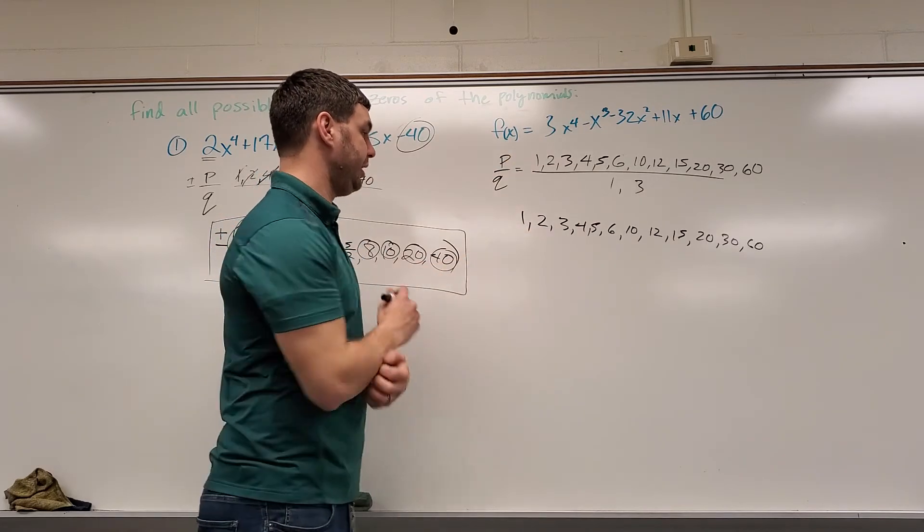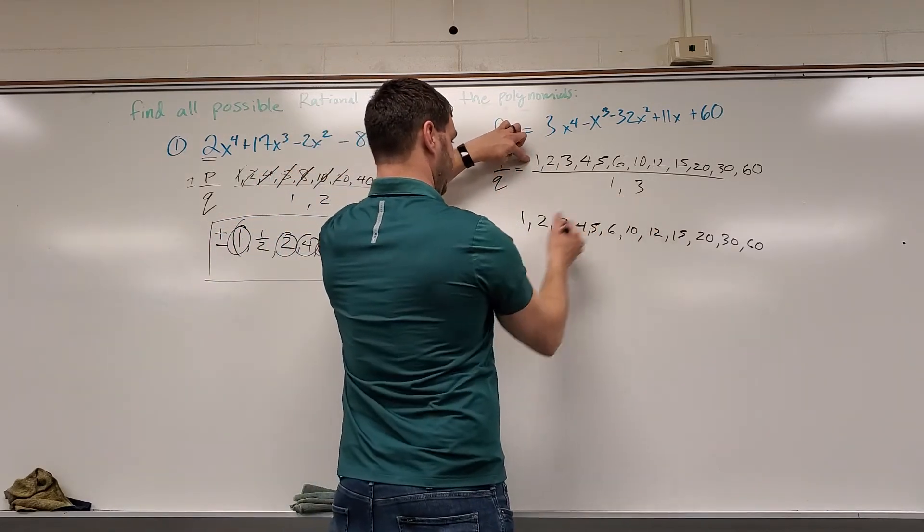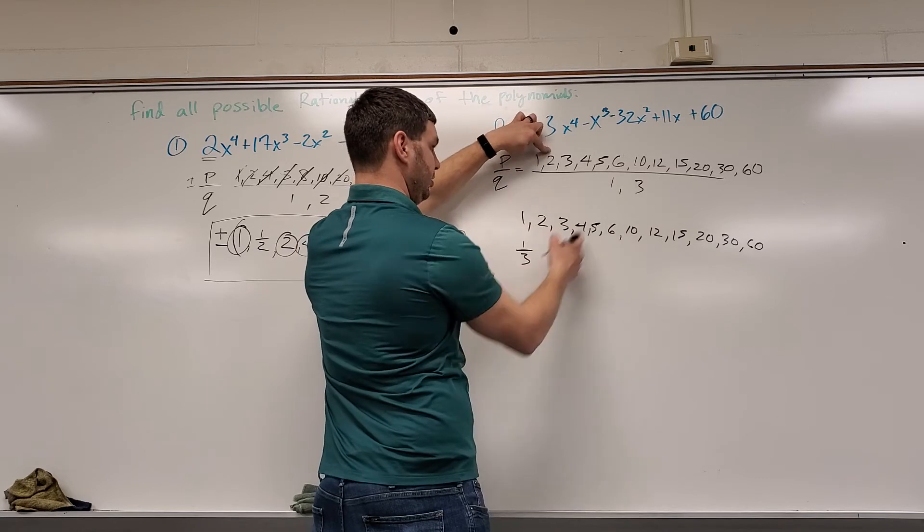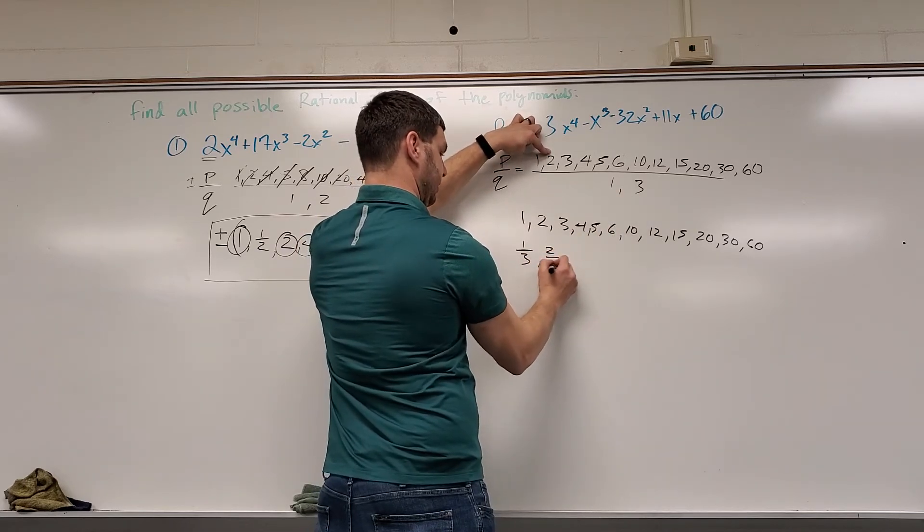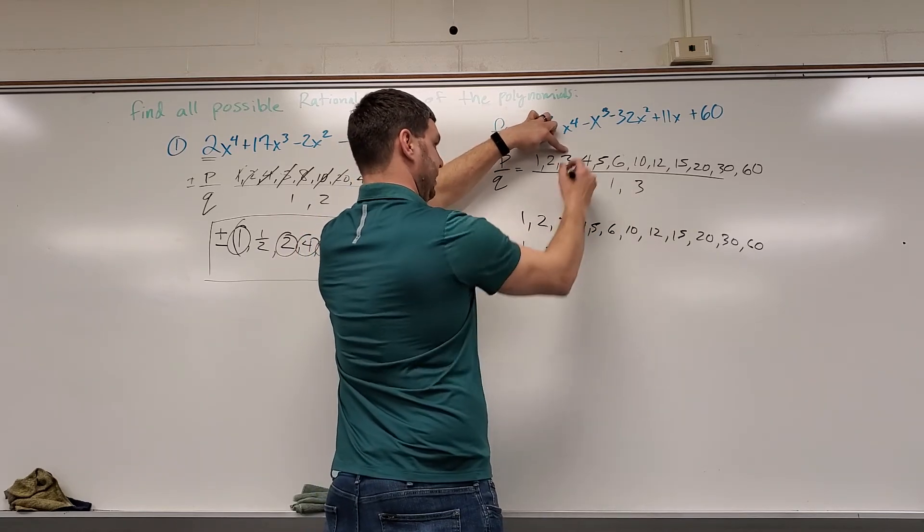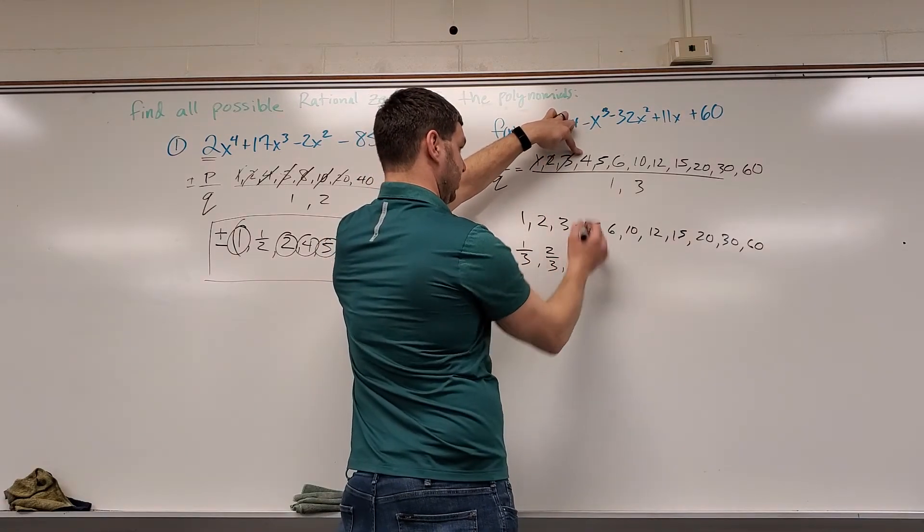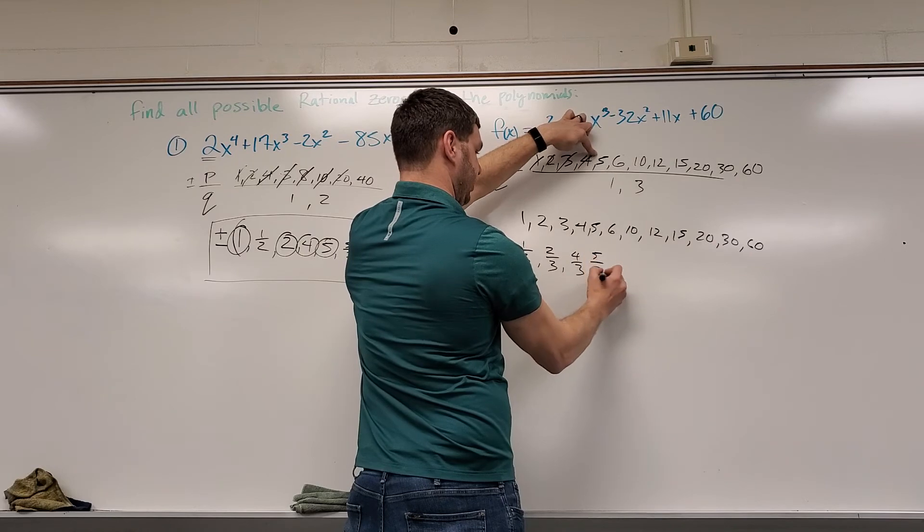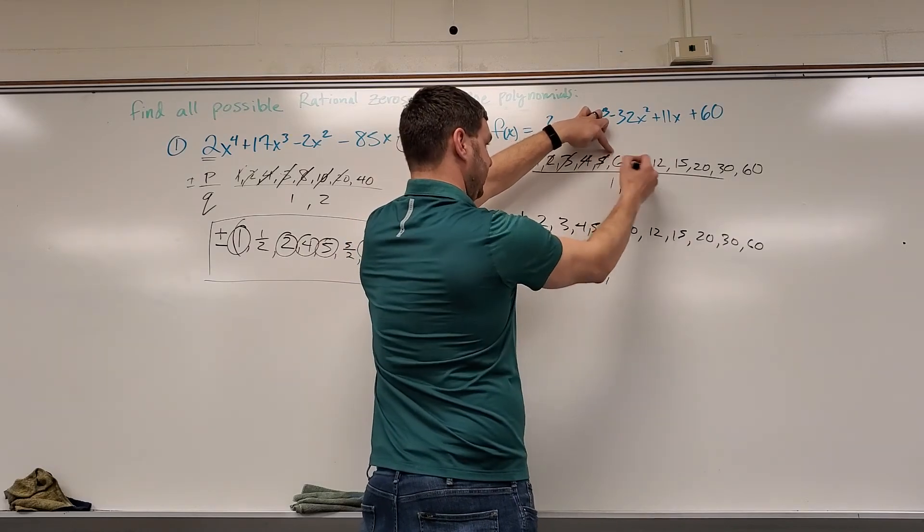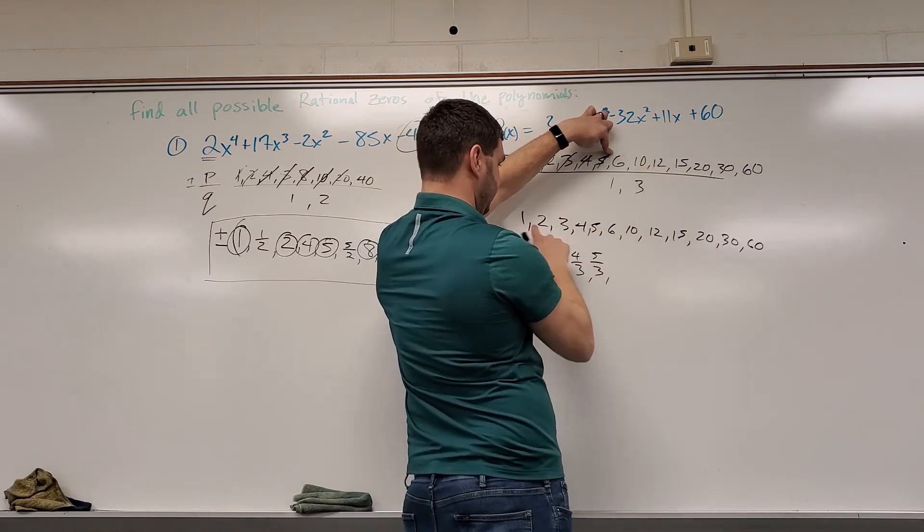And then I can do it over the 3. Well, 1 over 3 is 1 third. That's not on my list. 2 over 3, 2 thirds. Not on the list. 3 over 3 is 1. That is on the list. I can cross these eyes as I go. 4 over 3. Not on the list. 5 over 3, 5 thirds. 6 thirds is 2. That is on my list already.